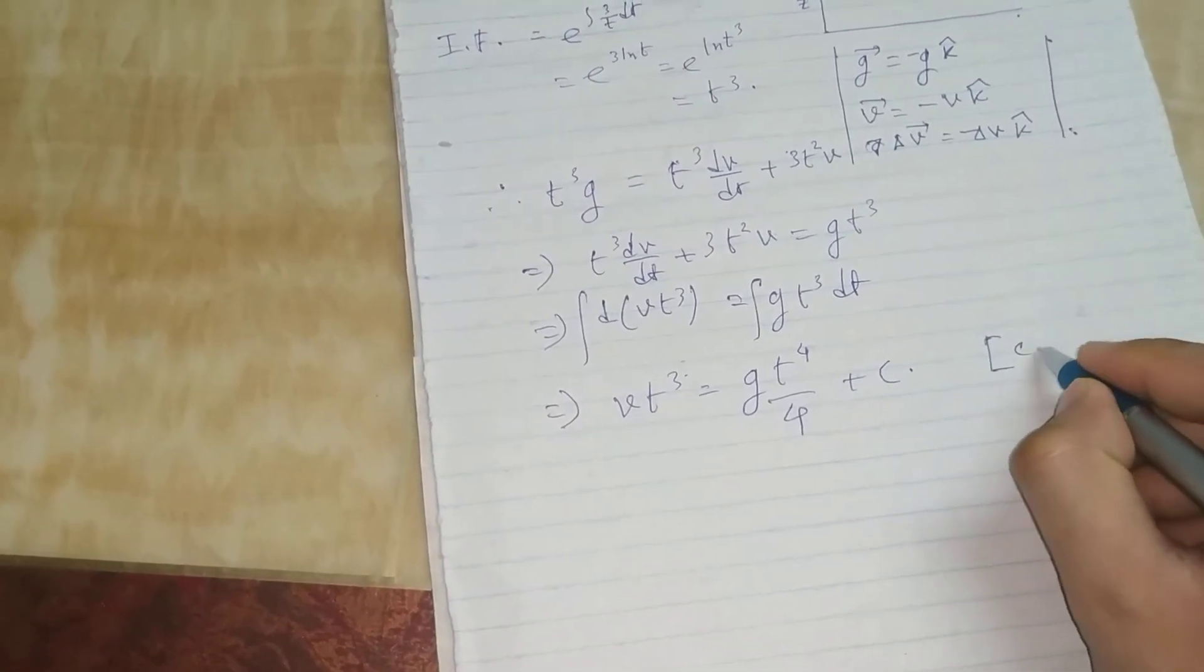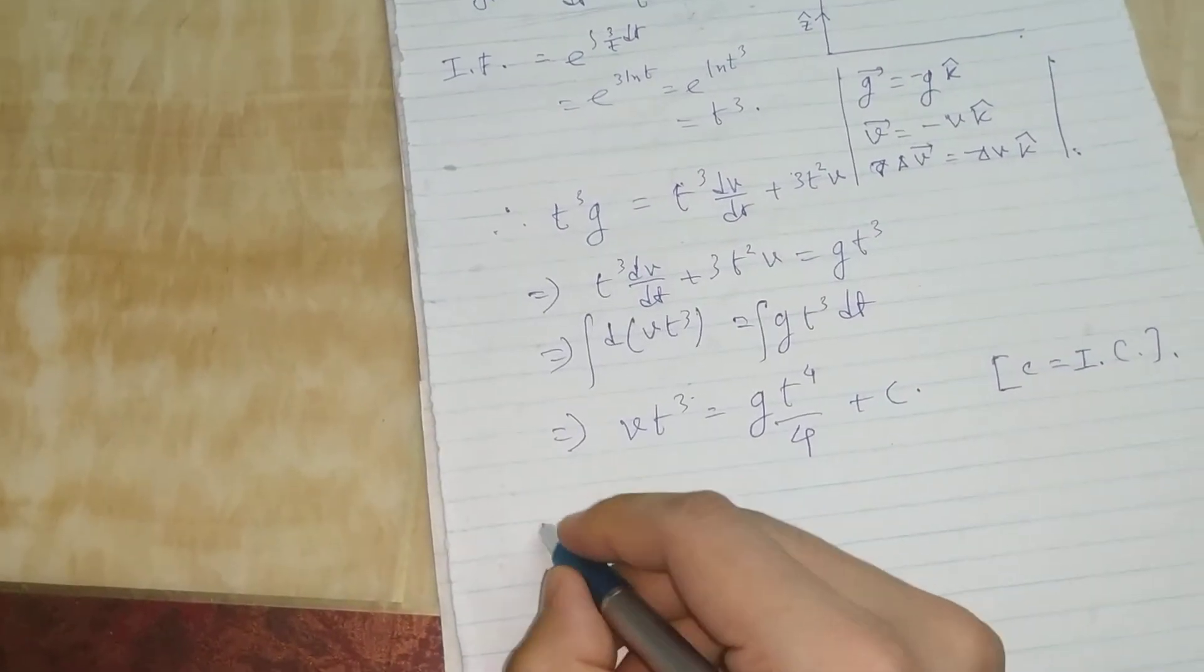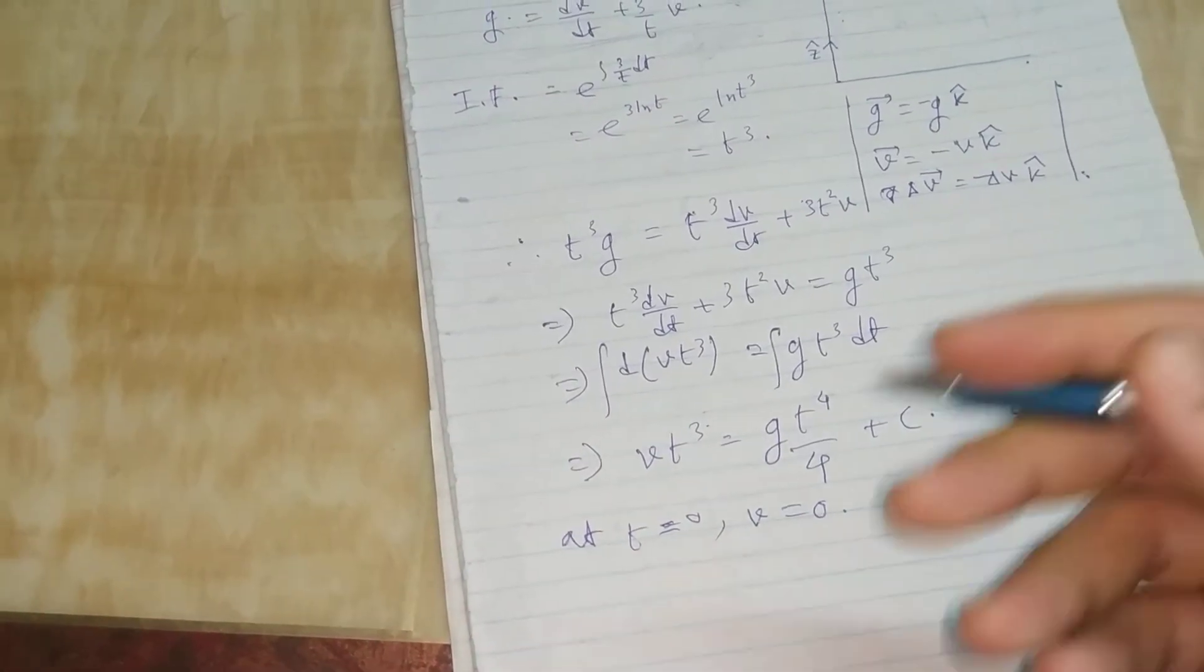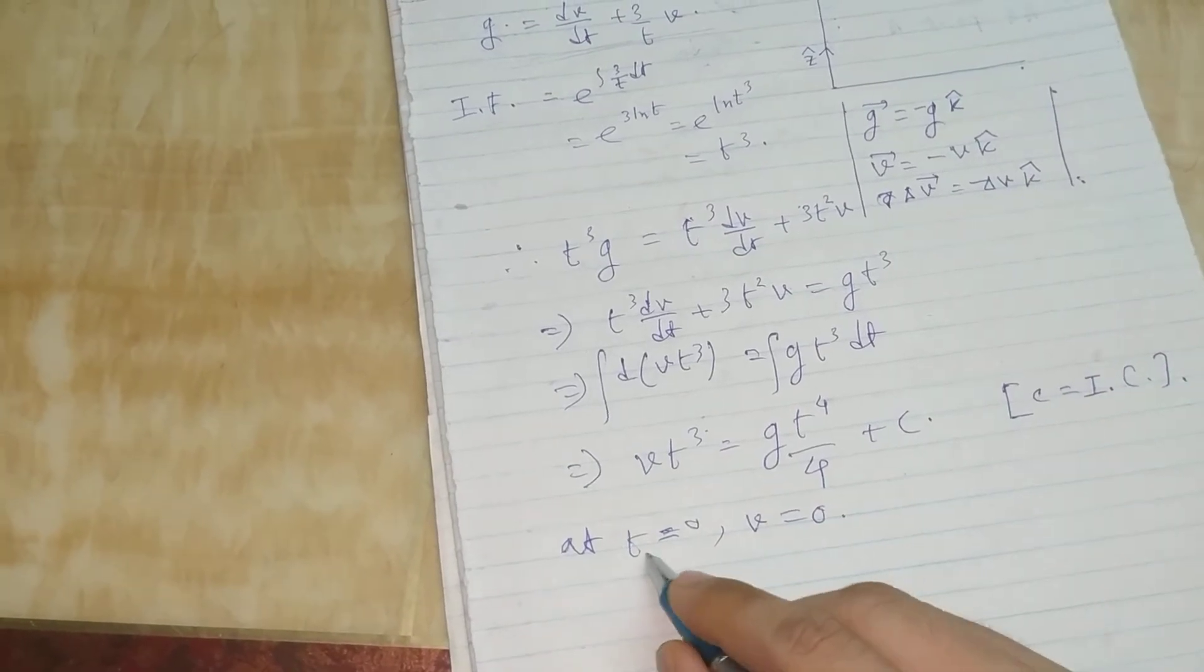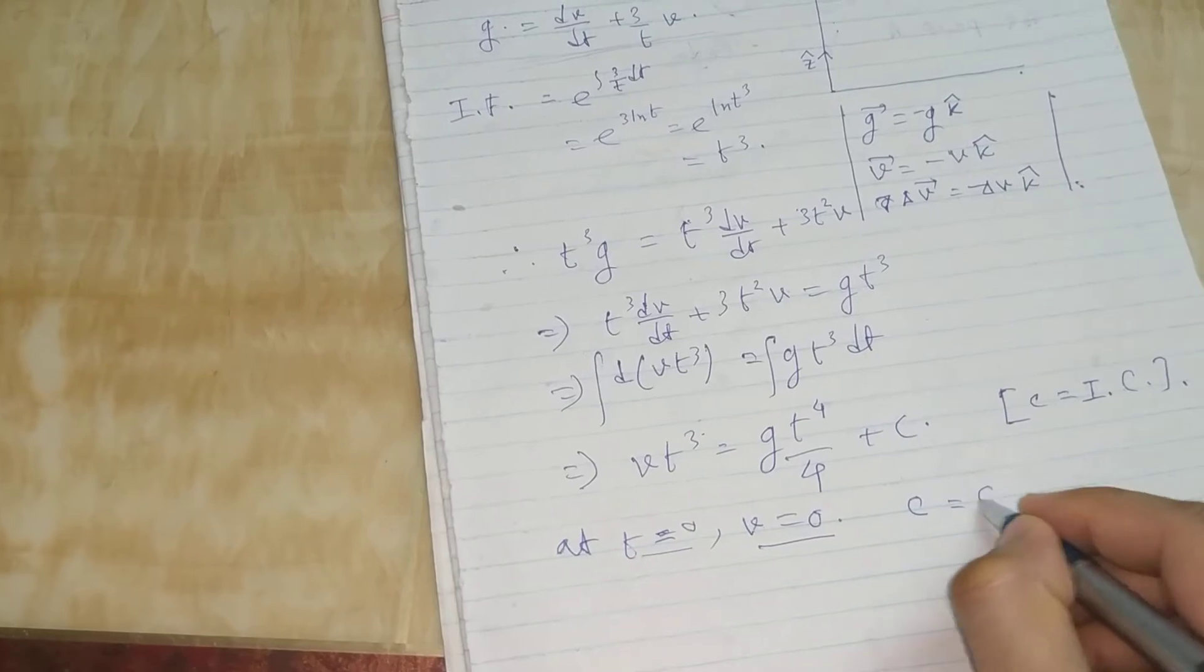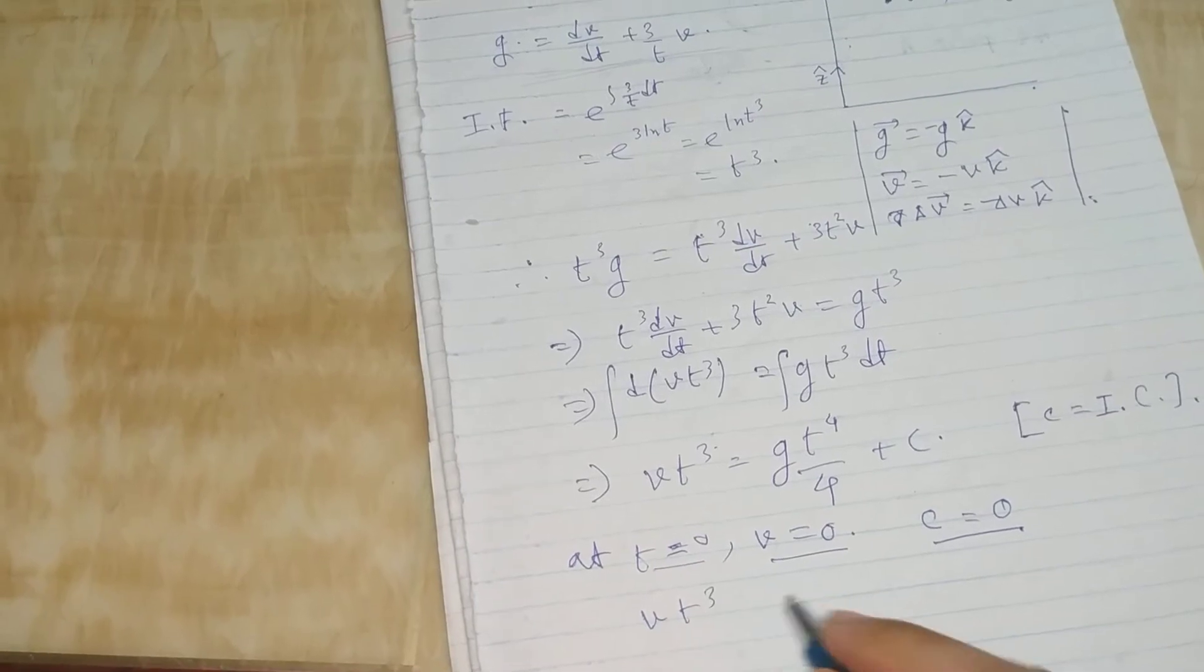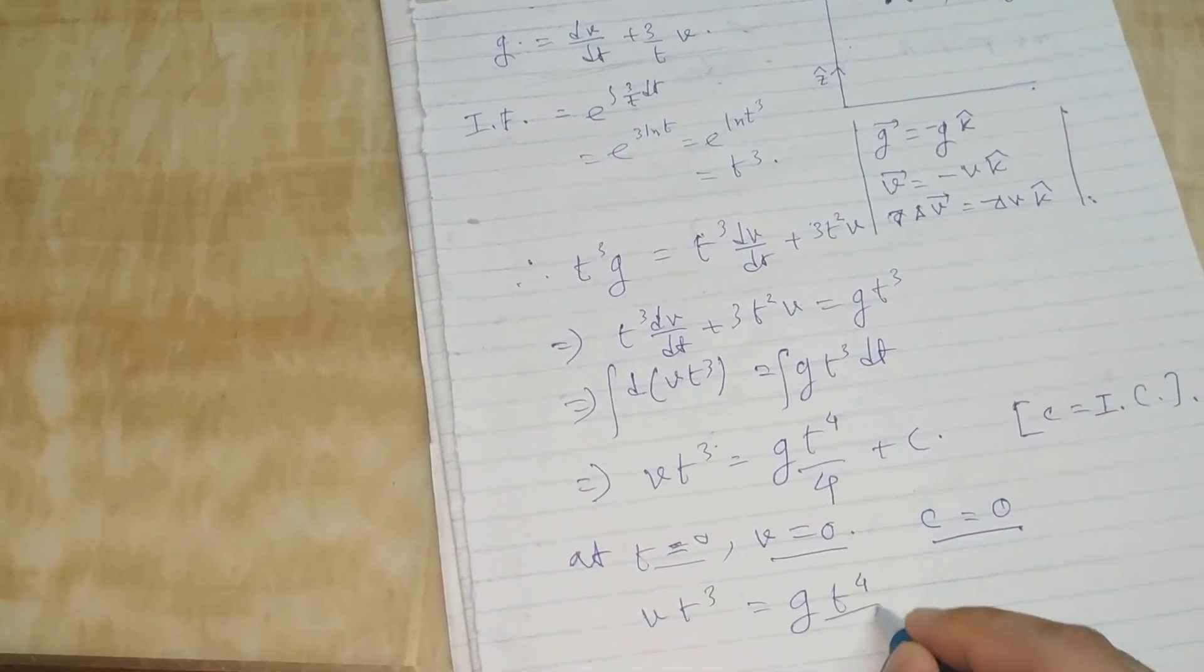Integrating, we get vt² = (g/3)t³ + C. This C is the integration constant. At t = 0, v = 0, as initially the drop was static. So C will be 0 from this relation. We can replace C as 0 and write the equation as v = (g/3)t.